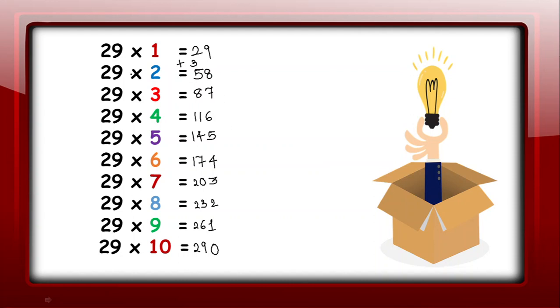So here is the table of 29. 29 multiplied by 1 is 29. 29 multiplied by 2 is 58. With 3 is 87. With 4 is 116. With 5 is 145. With 6 is 174.